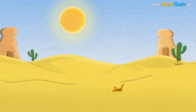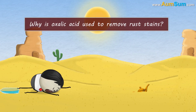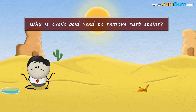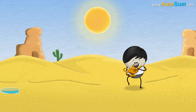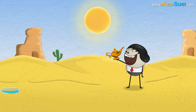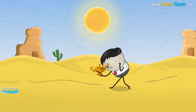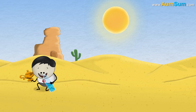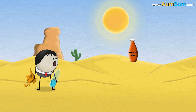Why is oxalic acid used to remove rust stains? Hey, you have a beautiful antique lamp. But look, it has a rust stain on it. Don't clean the rust stain with water. Instead, use this oxalic acid.